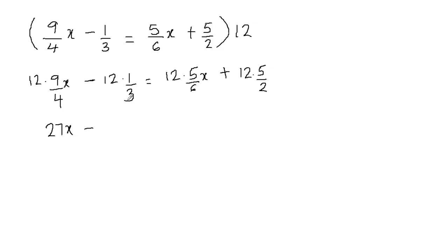Now let's see. 12 divided by 3 is going to give me 4 and 4 times 1 is going to give me 4. This is equal to 12 divided by 6 is going to give me 2 and 2 times 5 will give me 10. So I'll write 10x here. And then 12 divided by 2 is going to give me 6 and 6 times 5 is 30. So plus 30.